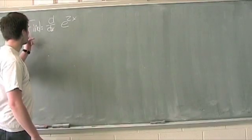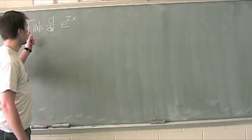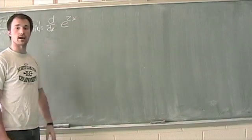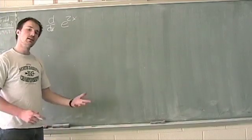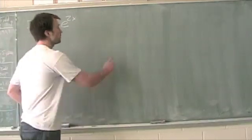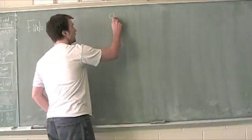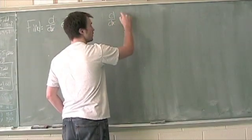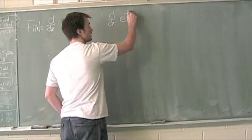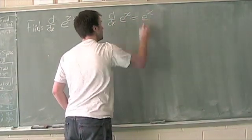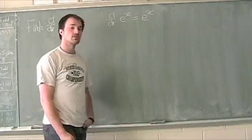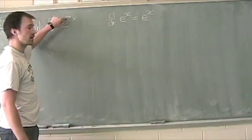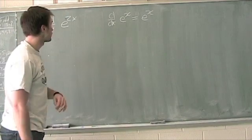In this video we're going to be looking at finding the derivative with respect to x of e to the 2x. This is a little bit different. In our last video we figured out that d/dx, or the derivative with respect to x of e to the x, is simply e to the x. We're going to take that, and now we're slightly different — we've got e to the 2x.